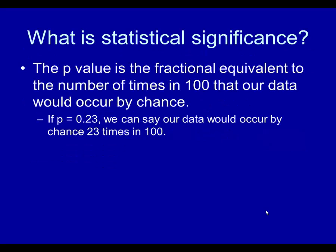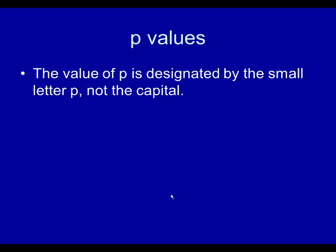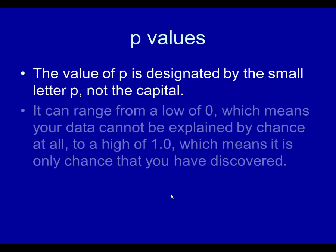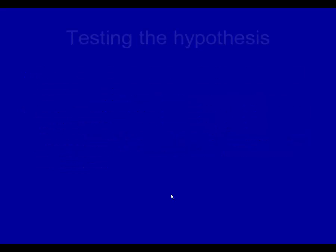What is statistical significance? The p-value is the fractional equivalent to the number of times in 100 that our data would occur by chance. If p equals 0.23, we can say that our data would occur by chance 23 times in 100. If p equals 0.57, we can say 57 times in 100. The value of p is designated by the small letter p, not the capital. We are talking about probability of chance being the explanation. It can range from a low of zero — meaning your data cannot be explained by chance at all — to a high of 1.0, meaning it is only chance that you have discovered.